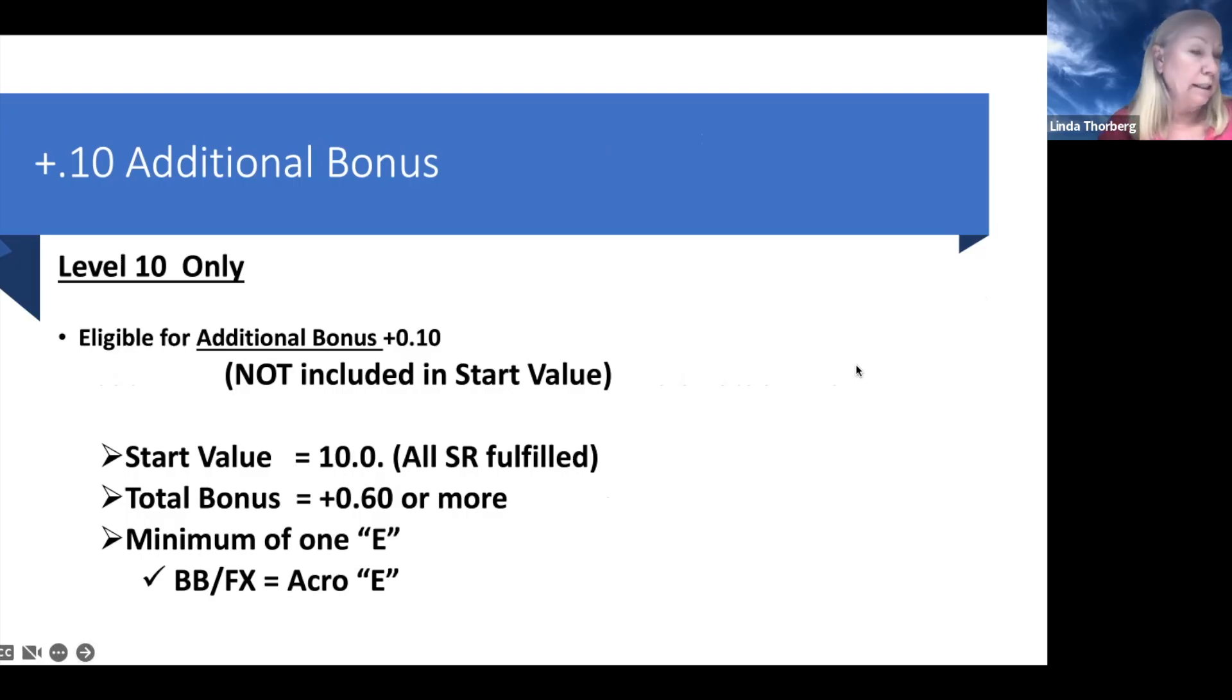We know that our start is at 9.5. We can get five tenths in bonus, but at level 10, we can earn an additional one tenth bonus for an E skill. So then their start value would actually be a 10 plus one. It's not a 10.1 because you can't give a score of a 10.1. You can only give a 10.0 as the highest score. But any E on bars is eligible for that extra plus one. The rules are that they have to have a 10.0 start to begin with, all their special requirements and obviously difficulty has to be fulfilled, and they have to have at least six tenths in bonus.